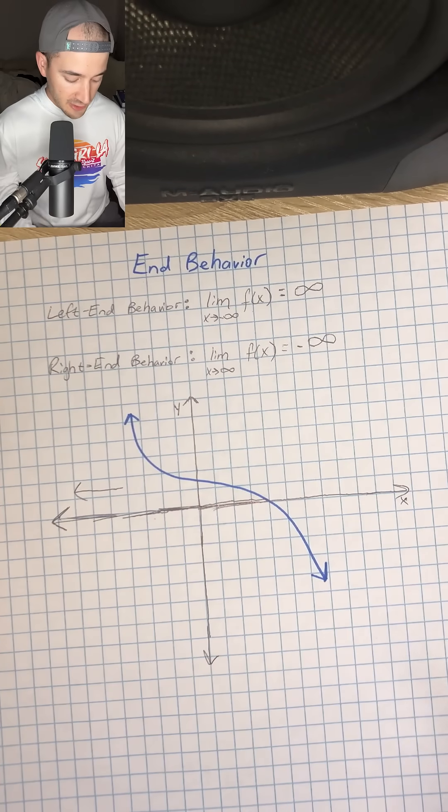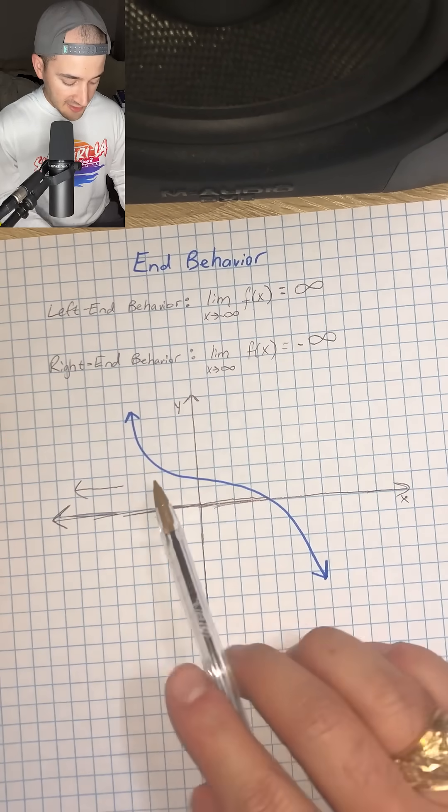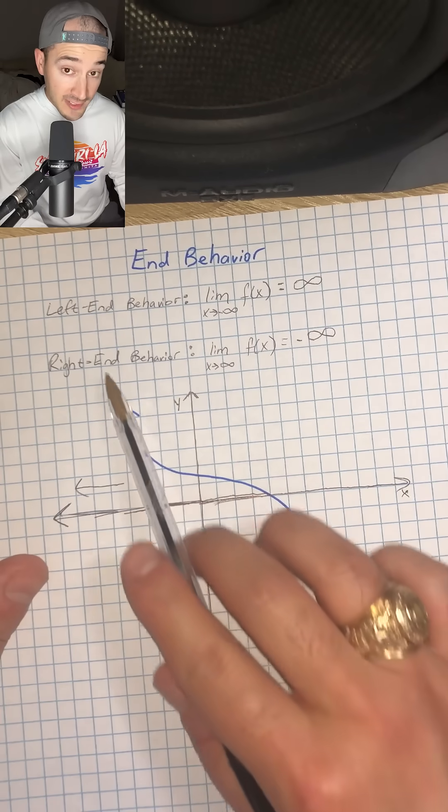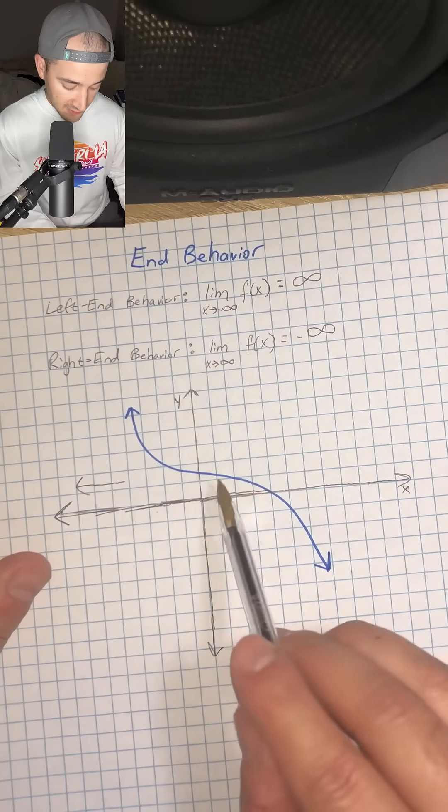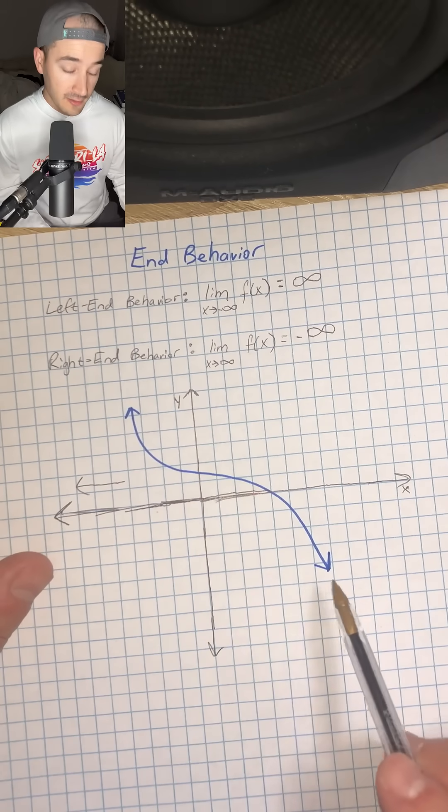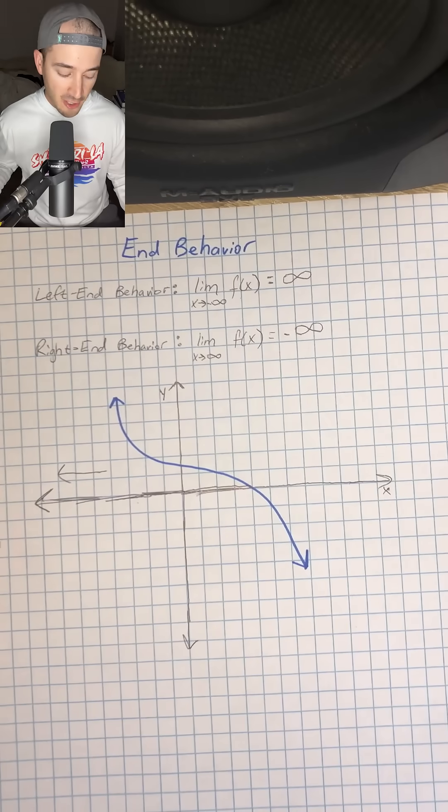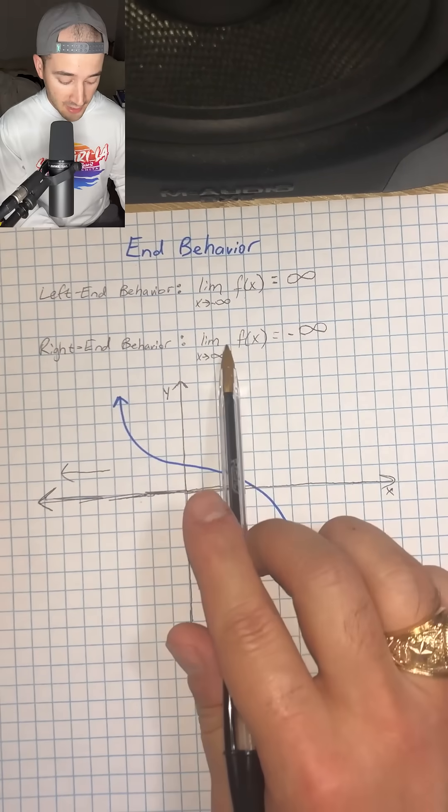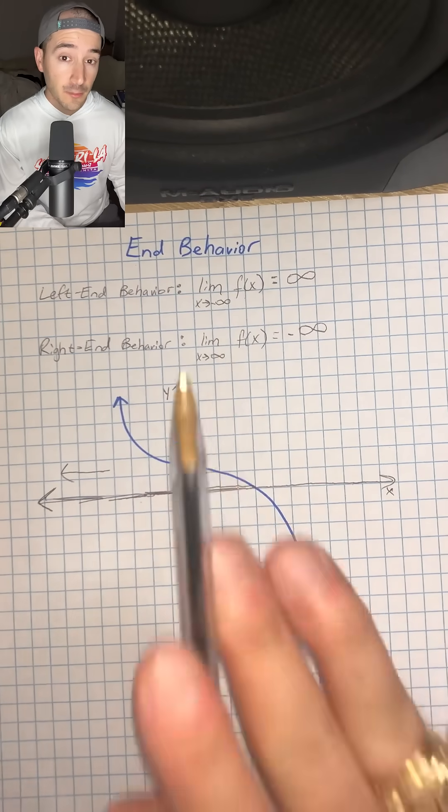And so a lot of times you'll hear them say that f of x is approaching positive infinity this way, and f of x is approaching negative infinity as we go towards our right end. So those are just some terms and ways to talk about it, but that's just a general overview. We'll get more into this later.